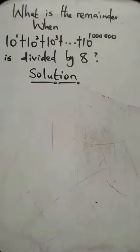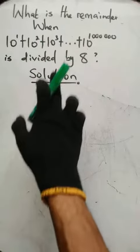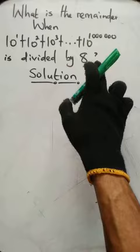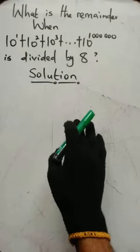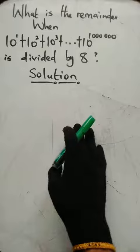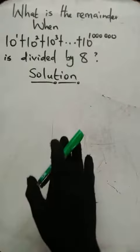Hey viewers, you're welcome once again. Today we're going to find the remainder when 10 to the power 1 plus 10 to the power 2 plus 10 to the power 3 plus all the way to 10 raised to the power 1 million is divided by 8. Wow! This number here is crazily insane.